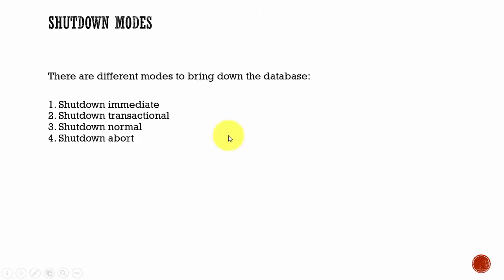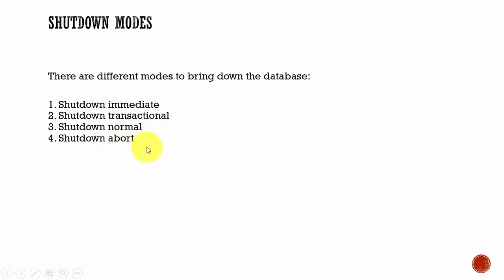There are several ways in which you can shut down a database. You can either shut down a database in an immediate mode, or a transactional mode, or a normal mode, or an abort mode. You can shut down a database in one of these four modes. As a DBA, you make the decision in which mode you want to shut down the database. We will see what happens in each mode.